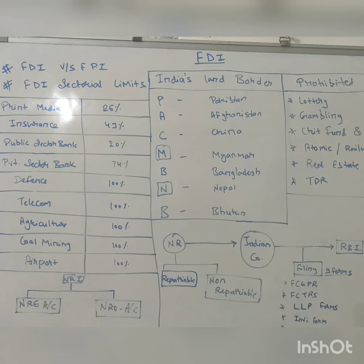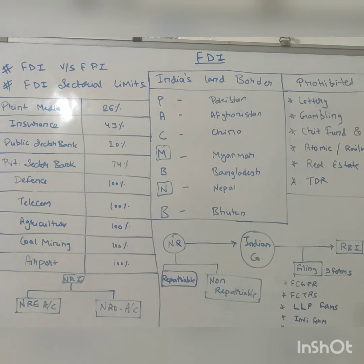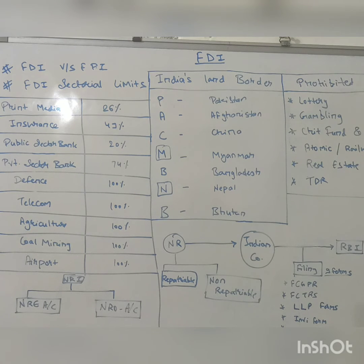Now let's see some sectorial limits — take these as samples, as these are for educational purposes so things don't get complicated. Print media: 26%. Insurance: 49%. Public sector banks: 20%. Private sector banks: 74%. Defense: 100%. Telecom: 100%. Agriculture: 100%. Coal mining: 100%. Airports: 100%. Please note some of them are 49% under automatic route, and beyond 49% you may need government approval. These provisions are very dynamic and keep changing.